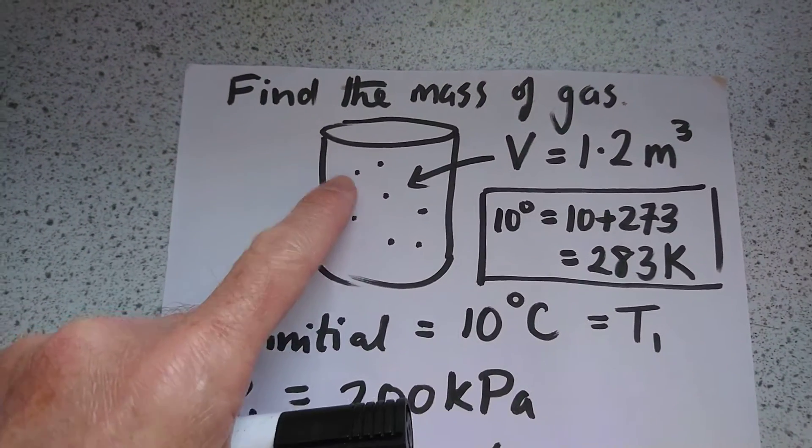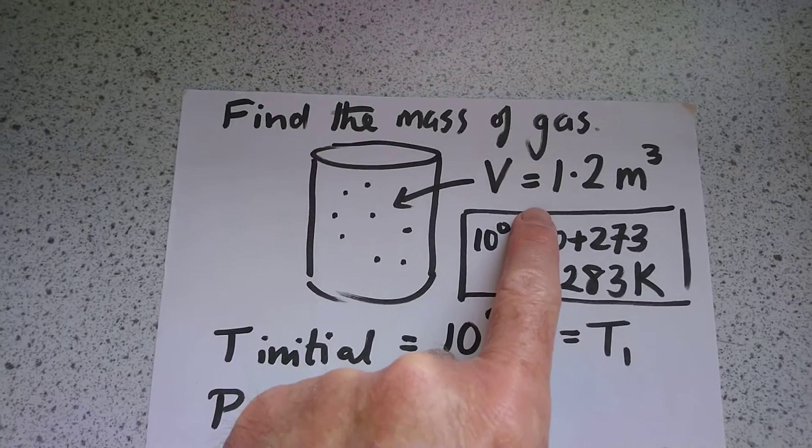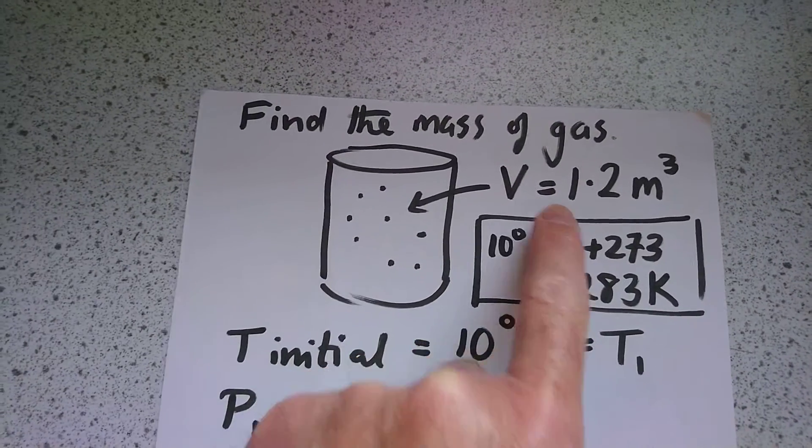So we need to find the mass of the gas in this cylinder which has a volume of 1.2 meters cubed.